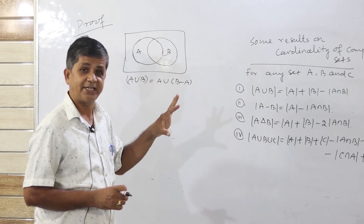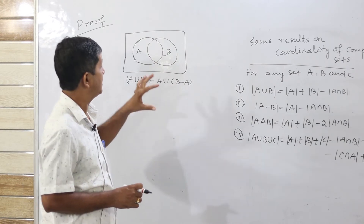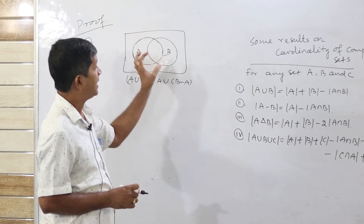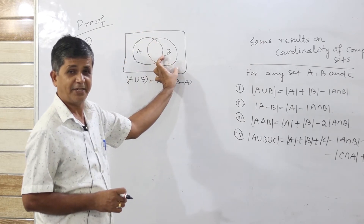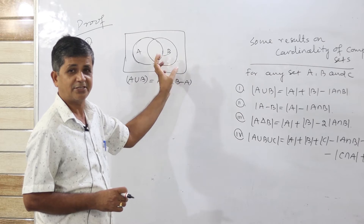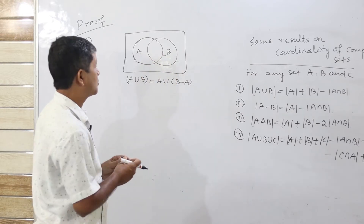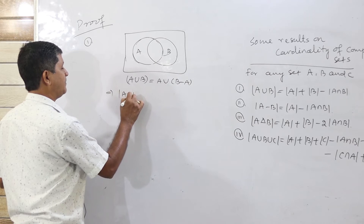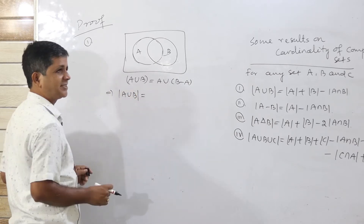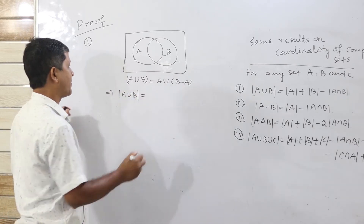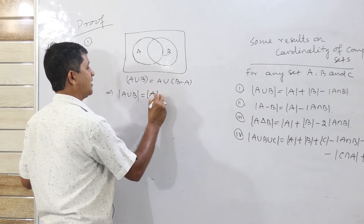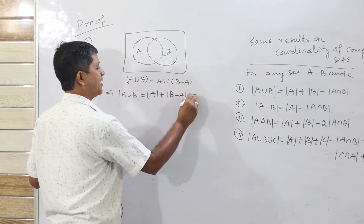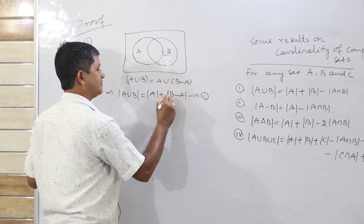The number of distinct elements in A union B equals the number of elements in A plus the number of elements in B difference A, since these two sets are disjoint. So cardinality of A union B equals cardinality of A plus cardinality of B difference A — this is equation 1.